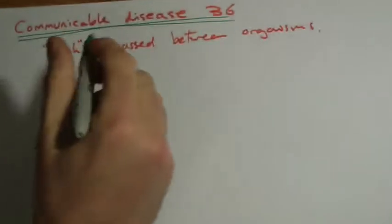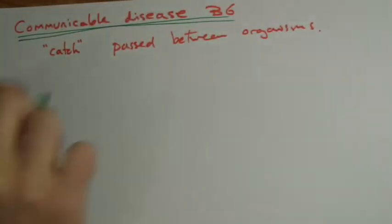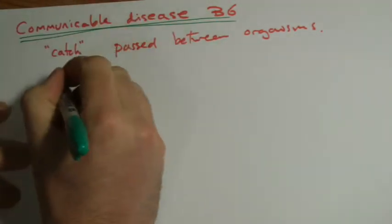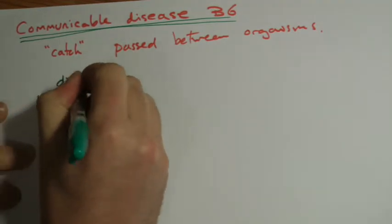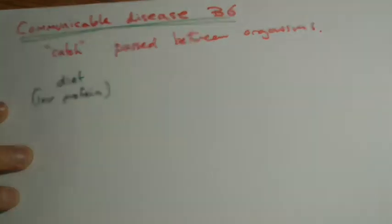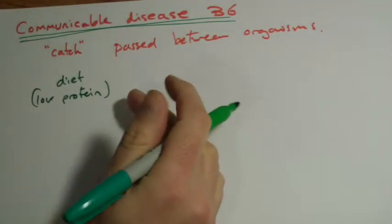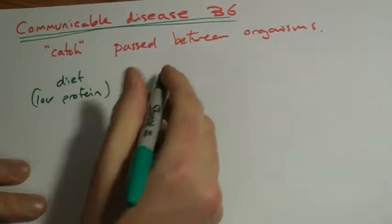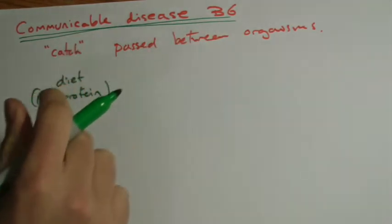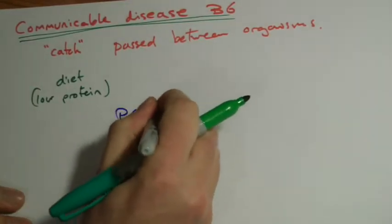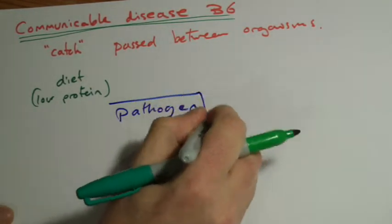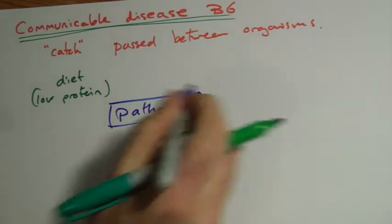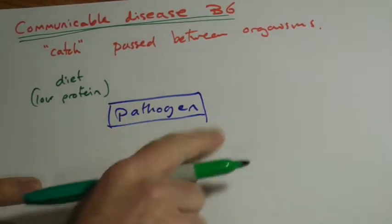First to just consider and remember that it's not just the communicable disease itself, whether it's a bacteria, virus, whatever it may be. Things like your diet, particularly if it's a low protein diet, can make you more at risk of catching a disease. We should say, actually, we come into contact with these things all the time. I'll introduce this word, actually, here - pathogen, which is really useful. It means a disease-causing microorganism.